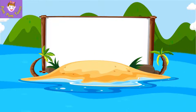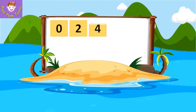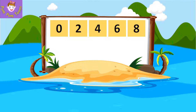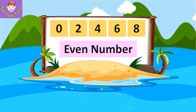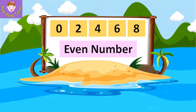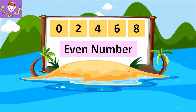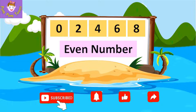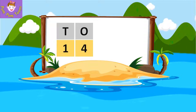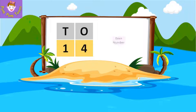A number which has 0, 2, 4, 6, or 8 in the one's place is called an even number. Even numbers always end with 0, 2, 4, 6, or 8. Look at this example — it has 4 in the one's place, so it is an even number.